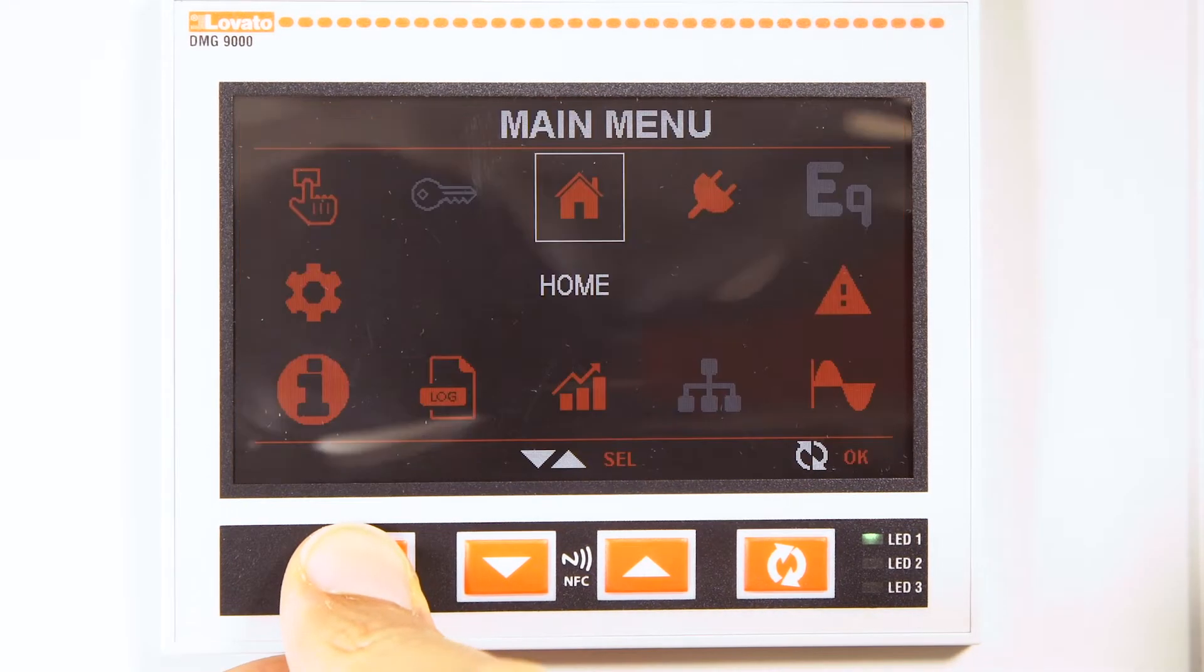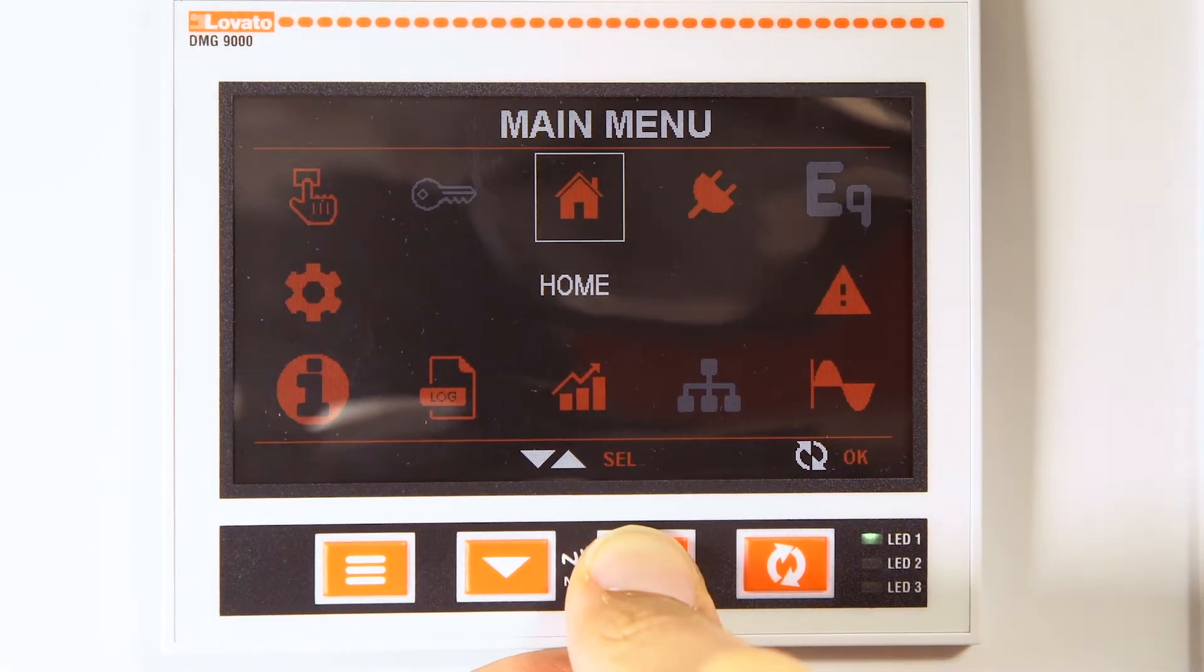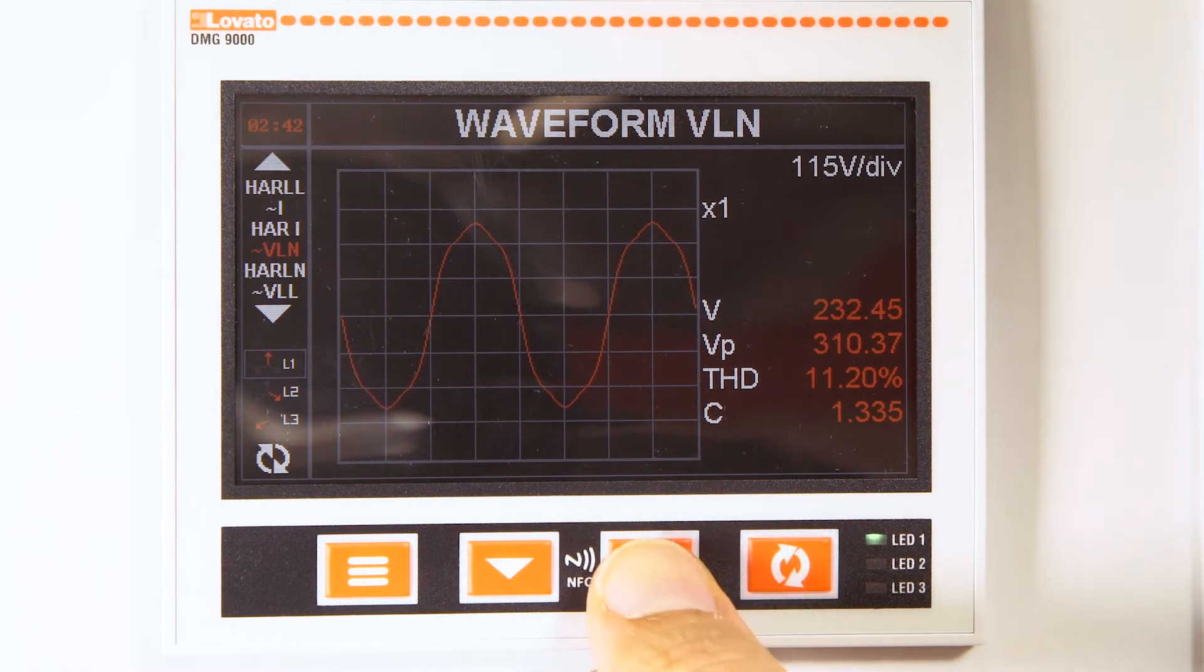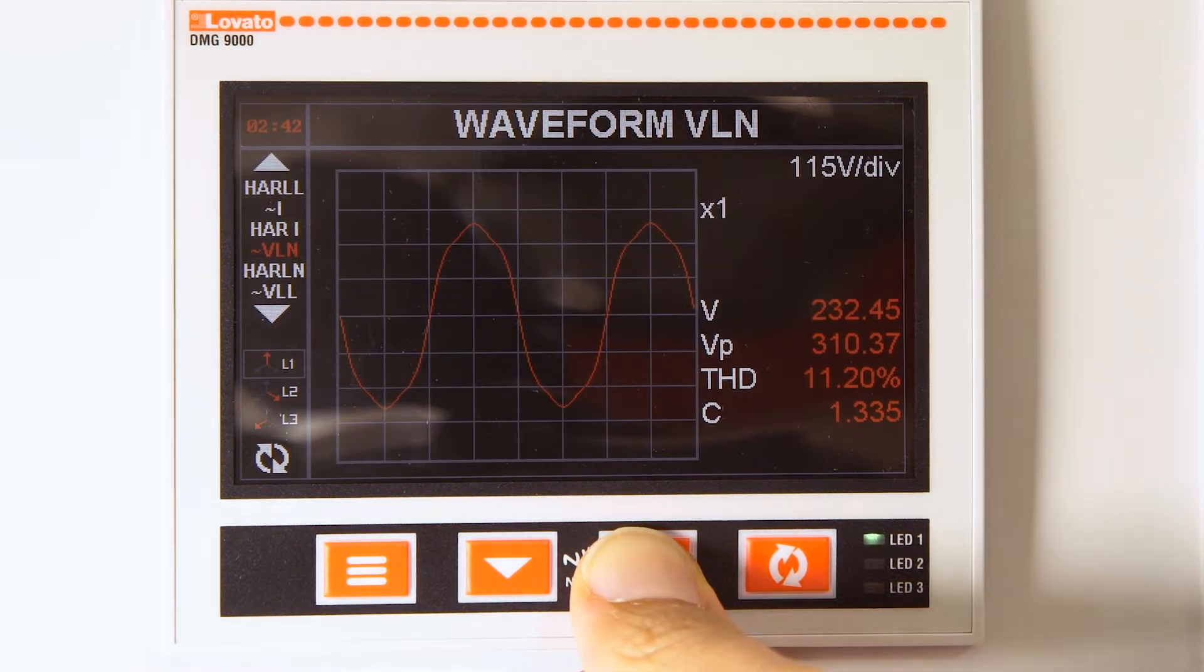Press the menu button and go to Waveform. Here you can look up the waveform and the harmonics present in the current.